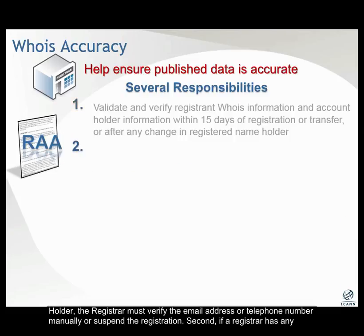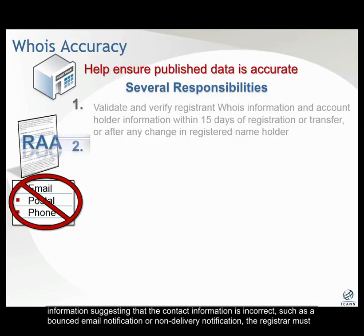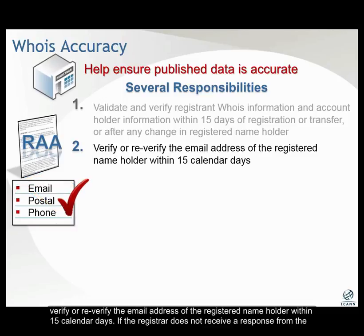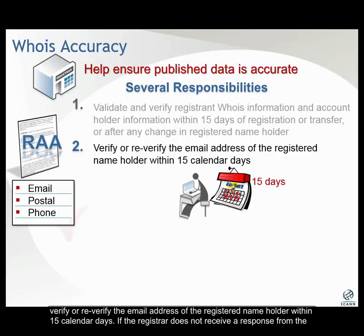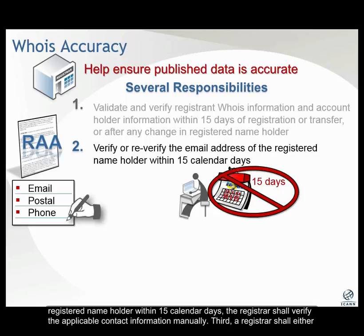Second, if a registrar has any information suggesting that the contact information is incorrect, such as a bounced email notification or non-delivery notification, the registrar must verify or re-verify the email address of the registered name holder within 15 calendar days. If the registrar does not receive a response within 15 calendar days, the registrar shall verify the applicable contact information manually.